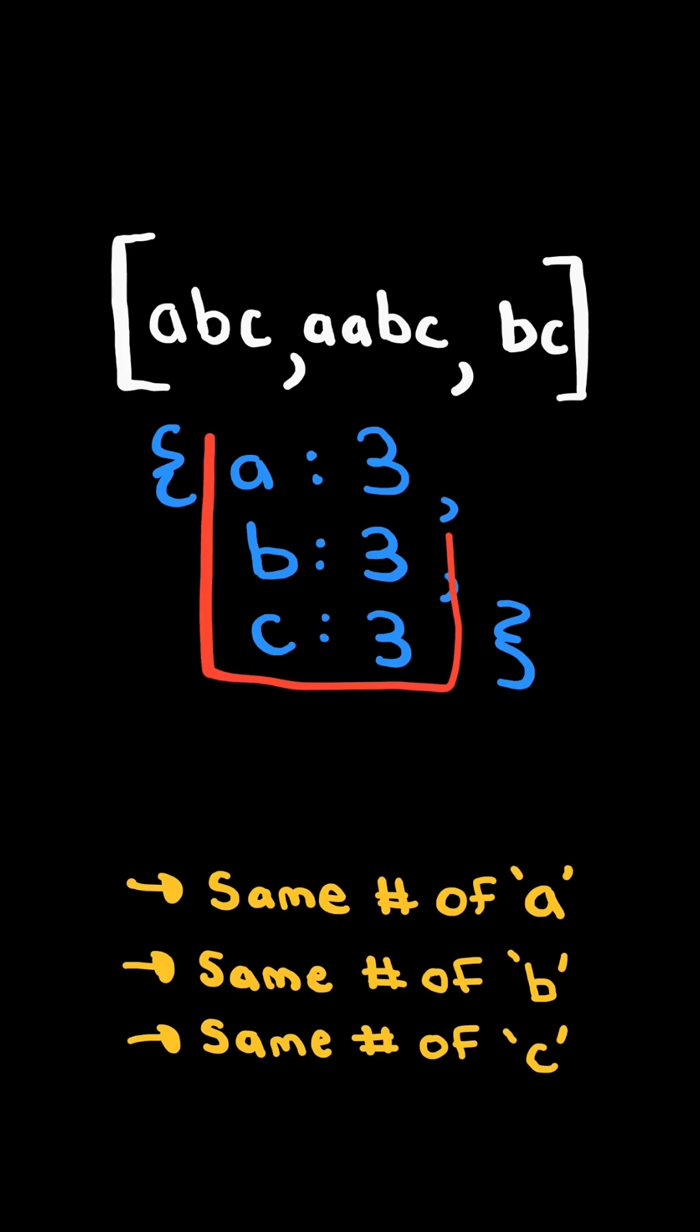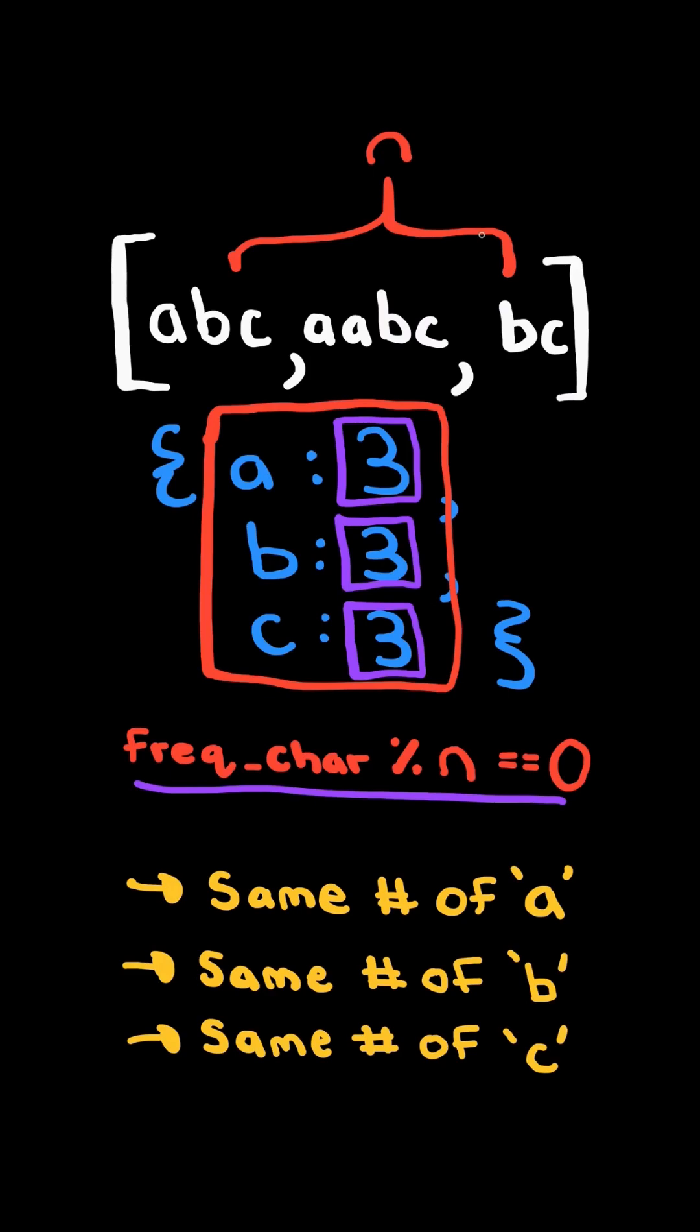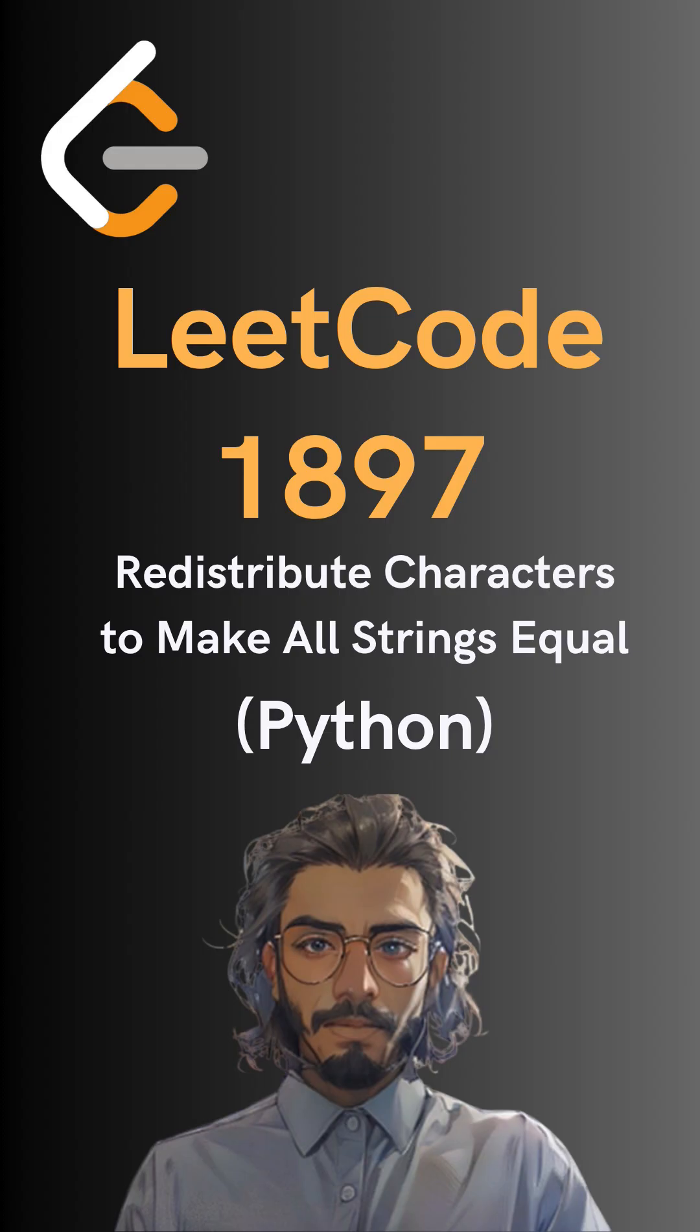We need to be able to distribute each character evenly to each word. In other words, the frequency of the character modulus the number of words must evenly divide. If this is true for all the frequencies, then we return true. And here's the code to do so.